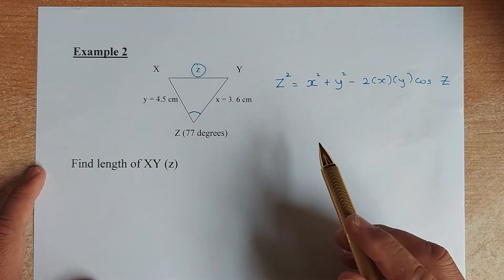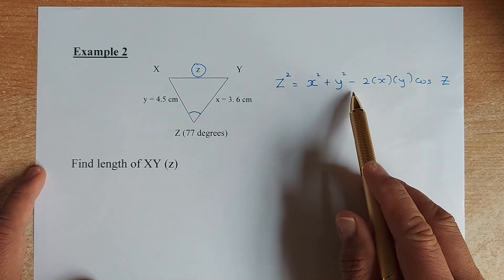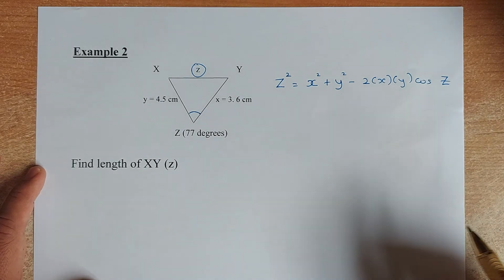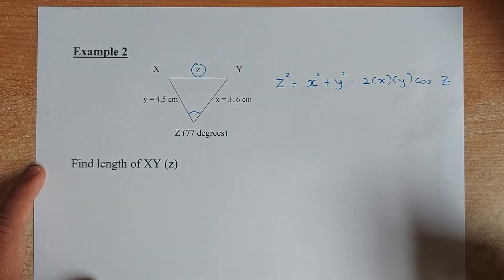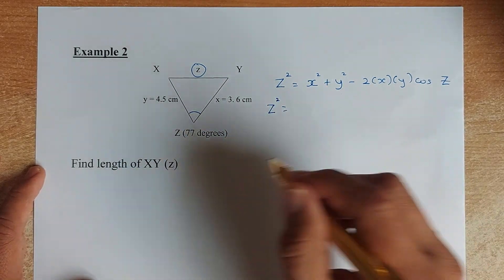So the formula is z squared equal to x squared plus y squared minus 2 multiplied by x multiplied by y multiplied by cosine Z. What's the next step? The next step is simple. We are going to substitute.